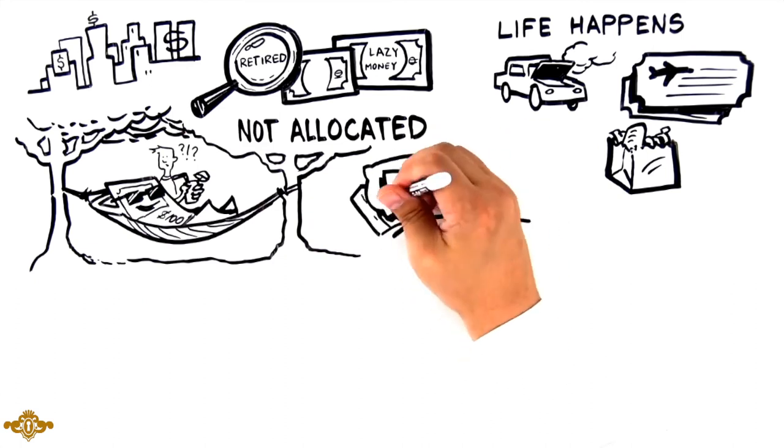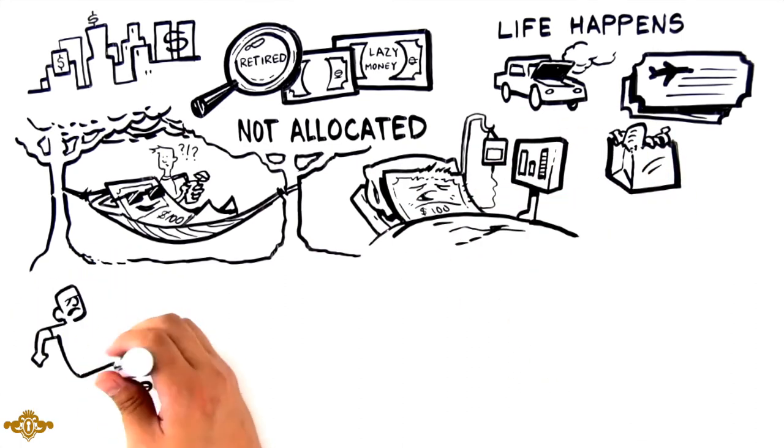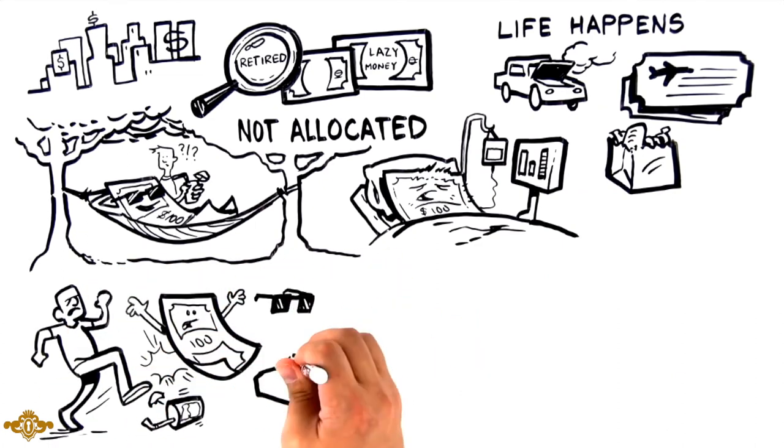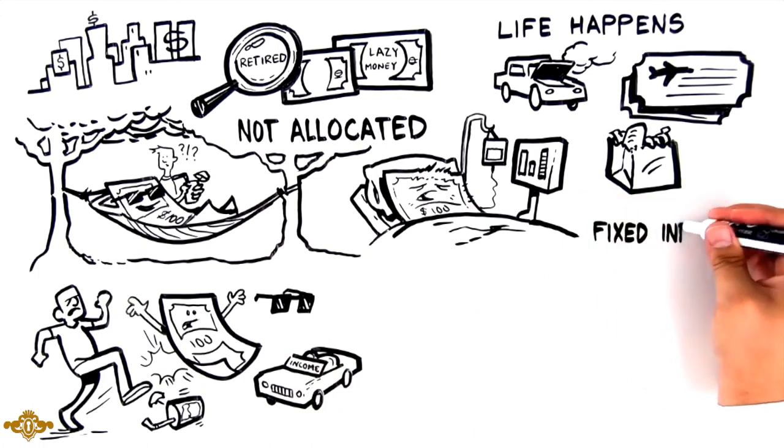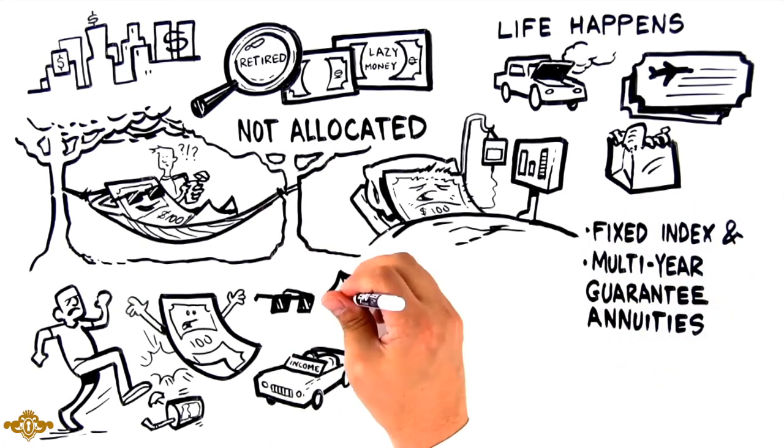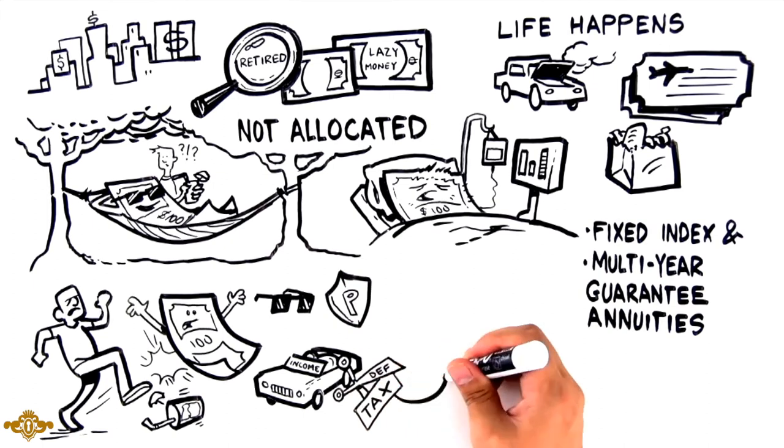For some, it's even worse. Your money hasn't retired, it's in a coma. It's time to put your money back to work. There are strategies that include financial vehicles, such as various types of fixed-index annuities and multi-year guarantee annuities, that can provide principal protection, tax-deferred growth, and, in some cases, the ability to get increasing income in retirement.